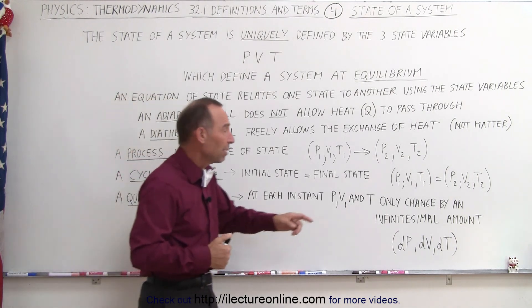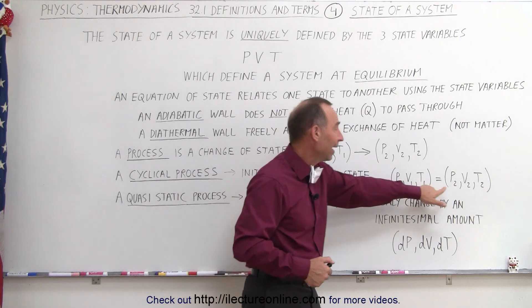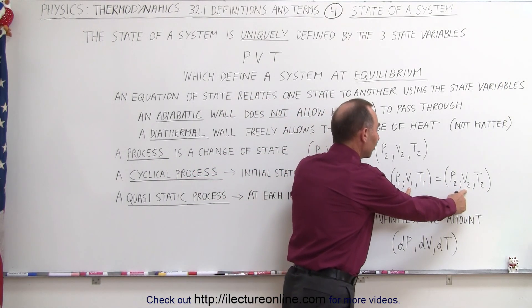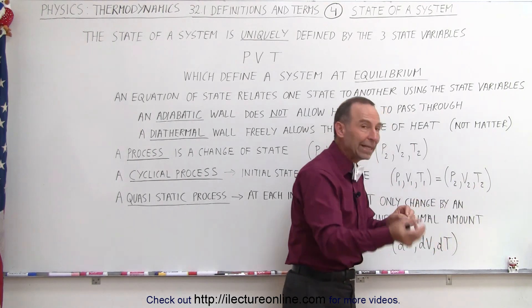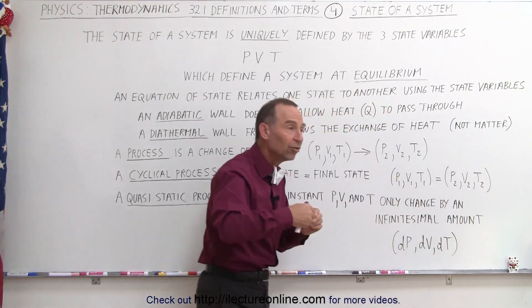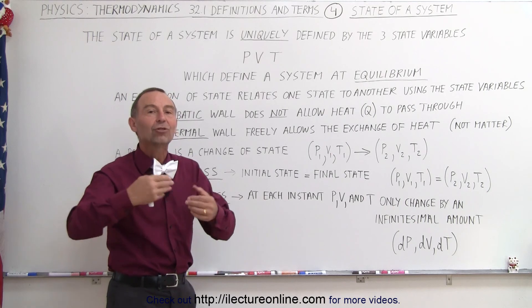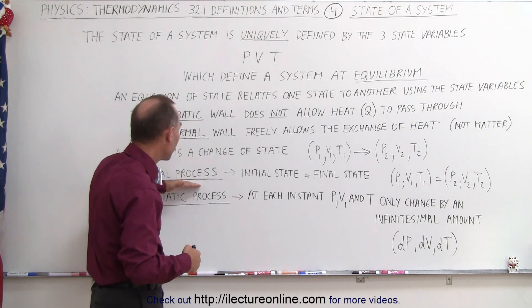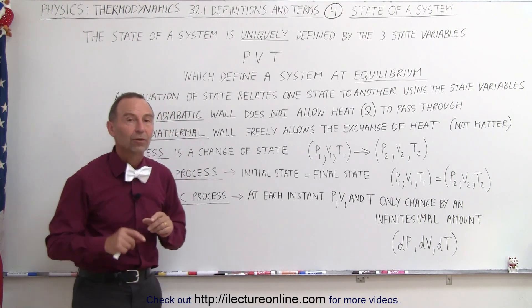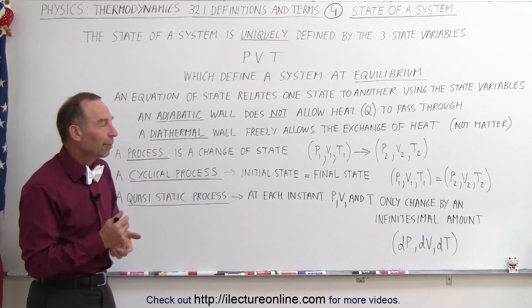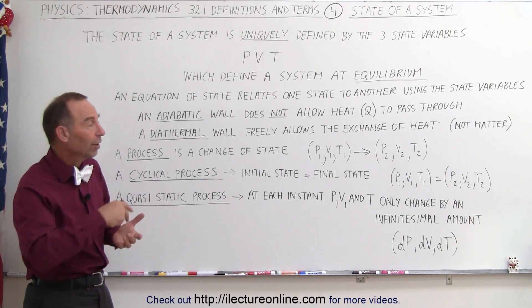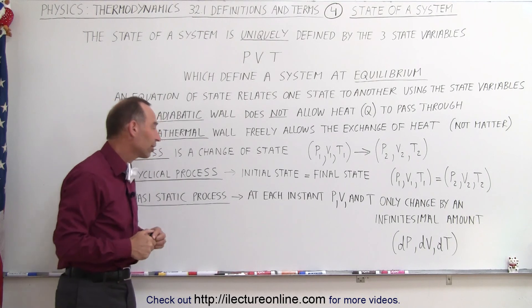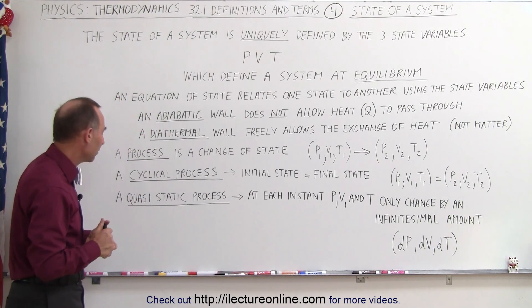Let's call that the final state. If the pressures are now the same, the volumes are the same, and the temperatures are the same between the initial and the final state, meaning you end up back in the state that you started with, then we have what we call a cyclical process. Any one of the three variables, or just one of them, may have changed during that cyclical process. But if you end up in the same place, we have a cyclical process, and we encounter that a lot in thermodynamics.